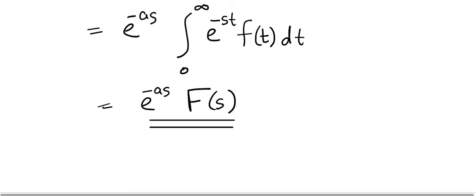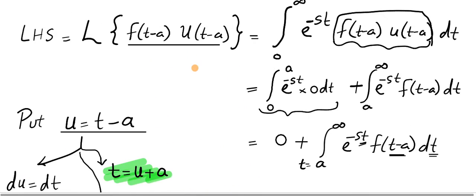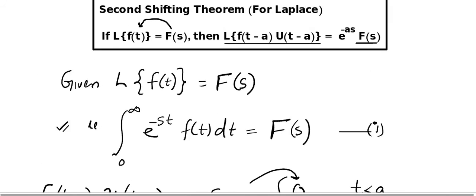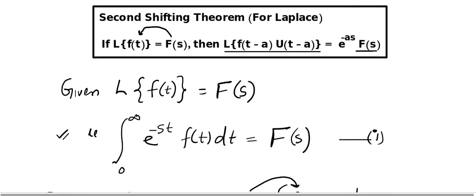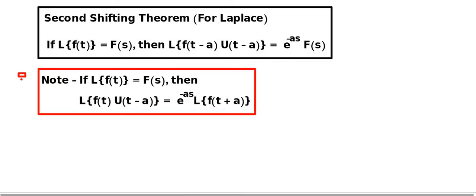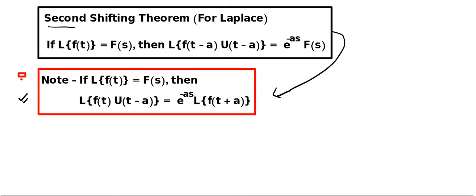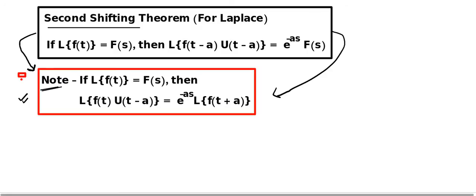That is it. I want you to go through the proof once or twice or thrice, and if something still bugs you, feel free to message me or put it in the comment section. Now there is one immediate consequence — before you start the next lesson, I want you to memorize this part. This is an immediate consequence of the second shifting theorem. Make sure this property is 100 percent clear, because we will be doing problems based on this particular note.